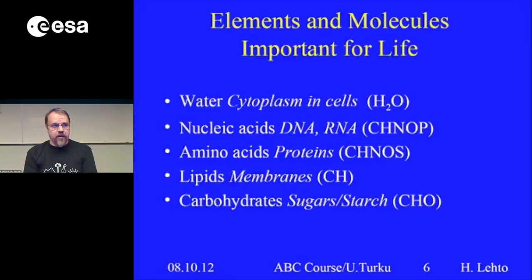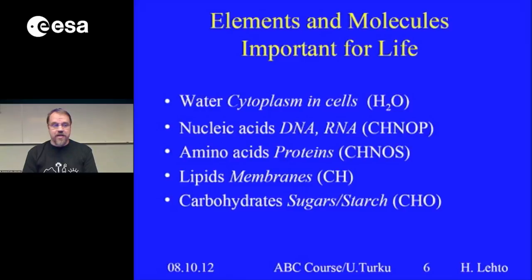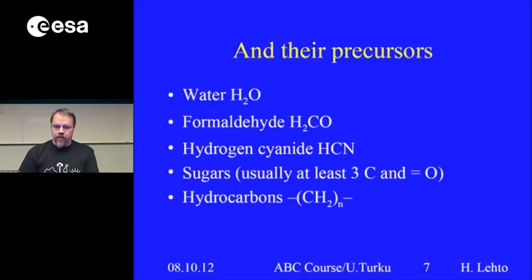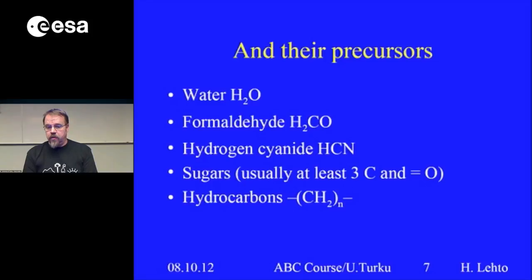I can see the plasma cell, DNA, RNA, proteins, membranes and sugar and starch. Looking at the most common elements, you can see repetition: C in many places, and H, N, O, P, and S — only a handful of elements. The precursors to these molecules are believed to be water, formaldehyde, hydrogen cyanide, and various kinds of sugars and hydrocarbons. These are things that will be touched by forthcoming lectures.